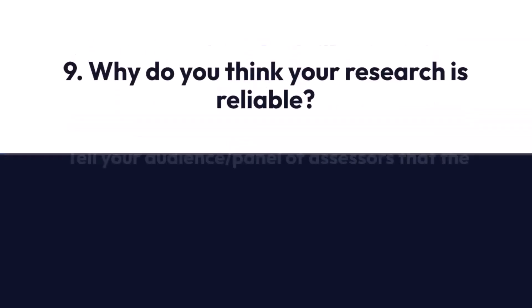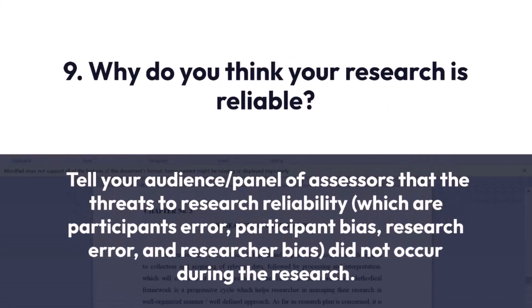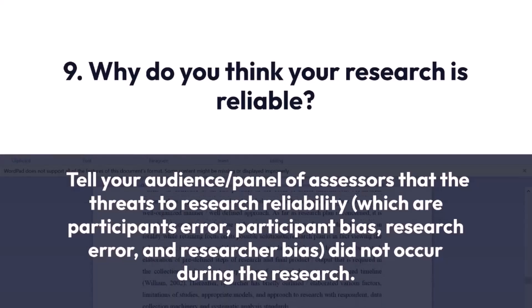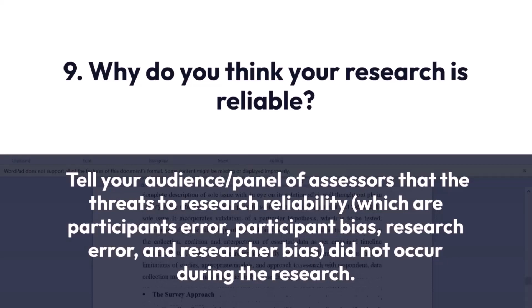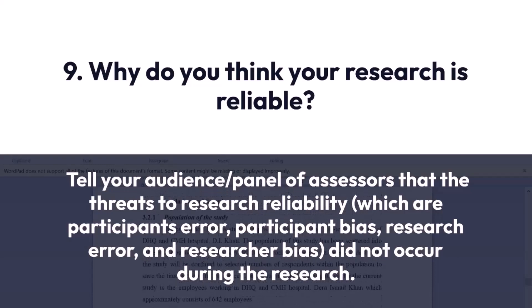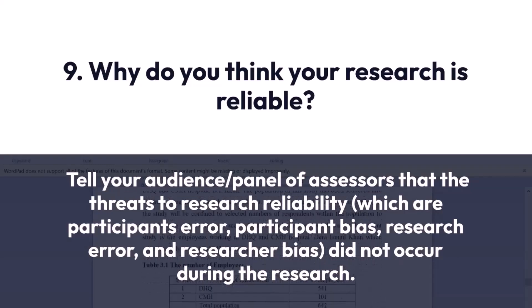Question number 9: Why do you think your research is reliable? To answer this question, simply tell your panel of assessors that the threats to research reliability — which are participants' error, participant bias, research error, and researcher bias — did not occur during the research. Or you can simply say that you made sure the threats were reduced to the barest minimum.